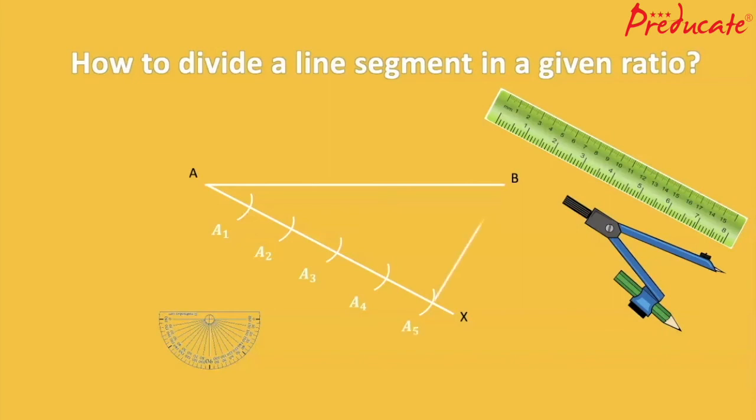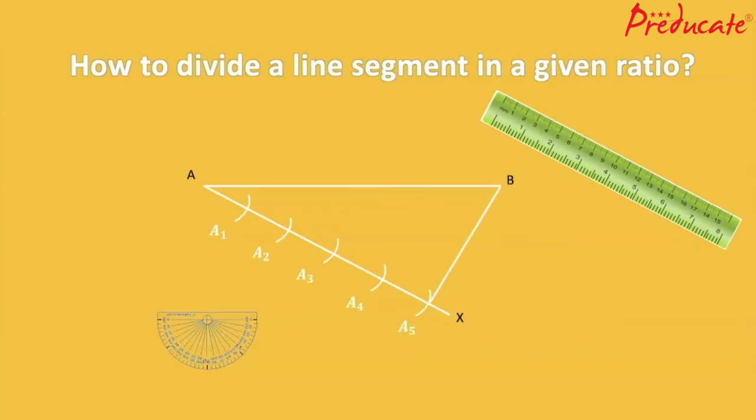Now join A5 and B, draw a line parallel to A5B. For that, construct an angle equal to angle A-A5-B at point A3.